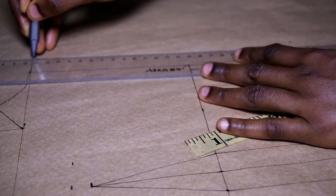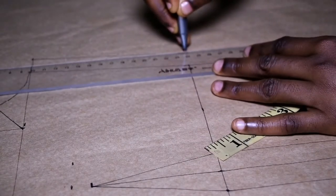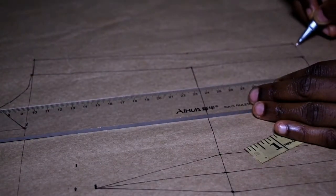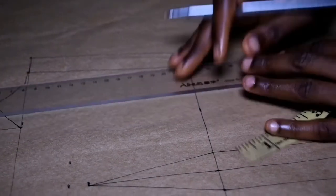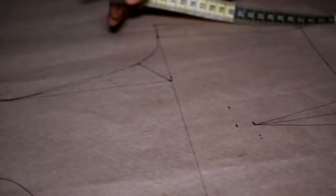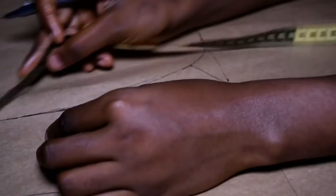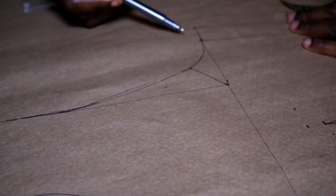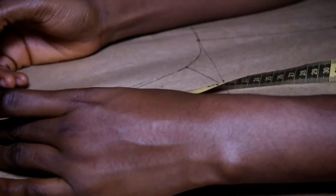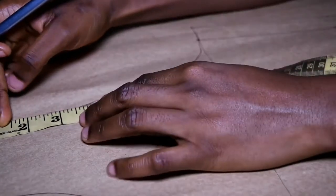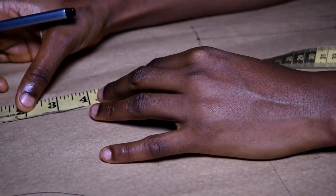So now over to your armscye, you need to measure the curve of your armscye. And once you measure that, you're going to divide it into two, so you need to measure it accurately.